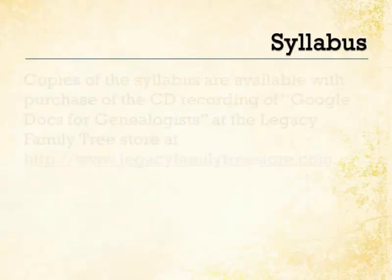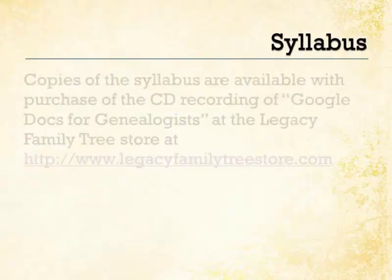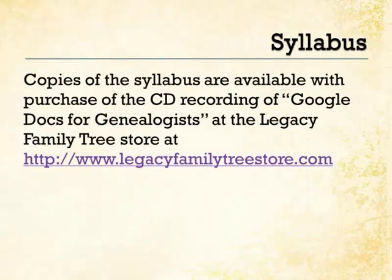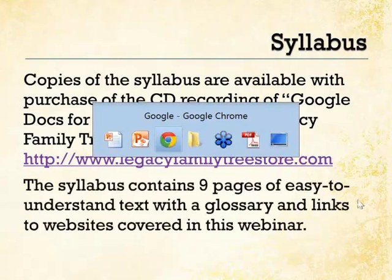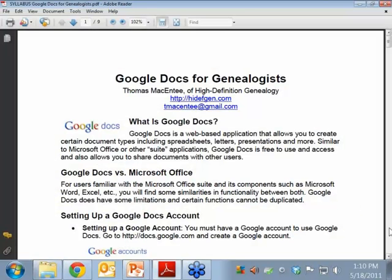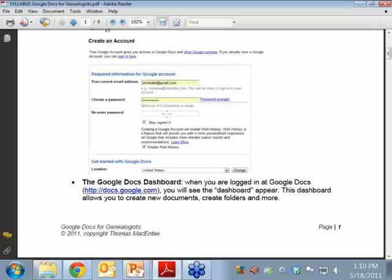A little bit of a word about the syllabus. The syllabus handout is available with the purchase of the CD recording of this webinar, Google Docs for Genealogists, and you'll be able to purchase that at the Legacy Family Tree Store. There are nine pages, and I'm going to show a sample here. This is roughly what the syllabus looks like, and it is in PDF format. It's got a lot of screen captures — very easy to understand.